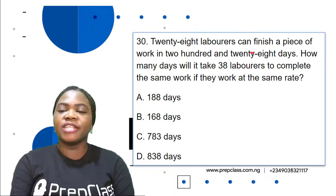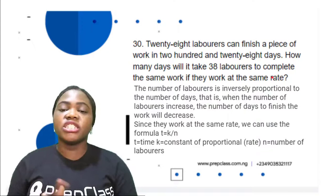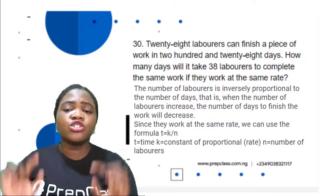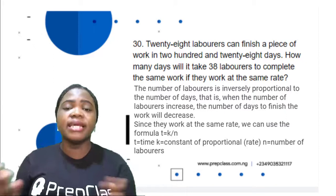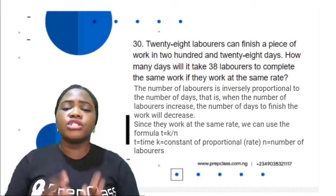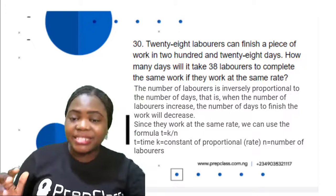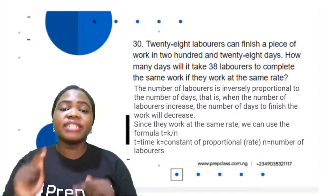Question 30: 28 laborers can finish a piece of work in 228 days. How many days will it take 38 laborers to complete the same work if they work at the same rate? Of course it will take them fewer days because the higher the number of laborers, the lower the number of days. The number of laborers is inversely proportional to the number of days — when laborers increase, days decrease. Since they work at the same rate, we use the formula T = K/N, where T is time, K is the constant of proportionality (the rate), and N is the number of laborers.